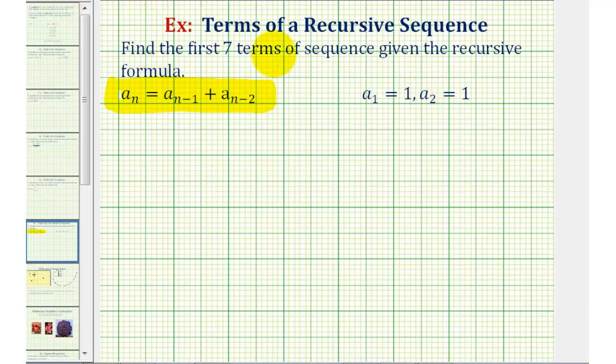If we want to find the first seven terms, we need to find a sub one through a sub seven. But we were already given the first two terms. So the first term is one and the second term is also one.